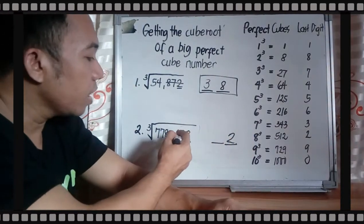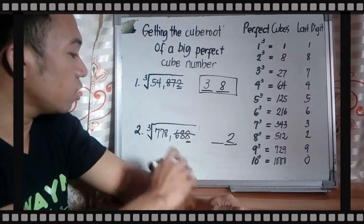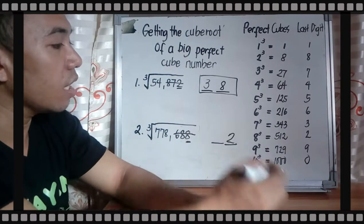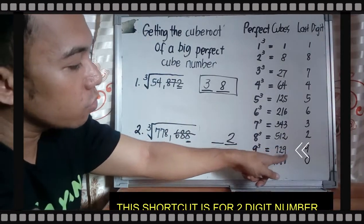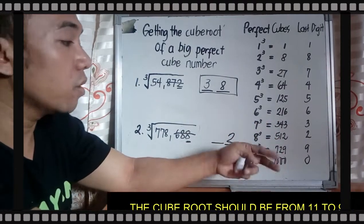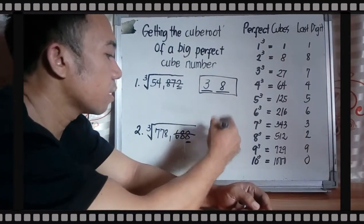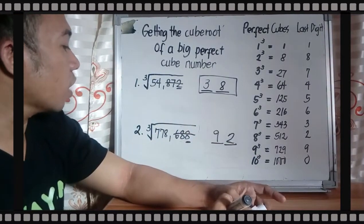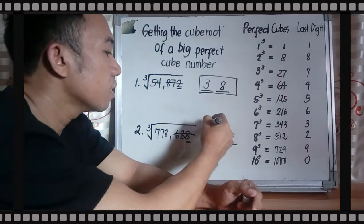Then ignore or disregard the last three digits. You will use 778. 778 is between 729 and 1000, but you will use the lesser, the smaller one. So your tens digit is 9. So the cube root of 778,688 is 92.